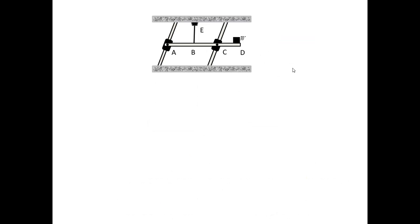The first free body diagram is the one for the glider at A. The glider is constrained by the inclined bar; the contact is frictionless, and therefore this constraint is represented by a force normal to the bar. The glider is also attached by a pin to the bar ABCD, and therefore on the free body diagram we show two forces.